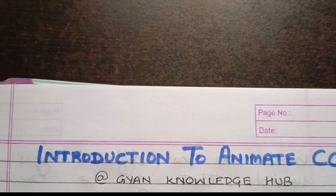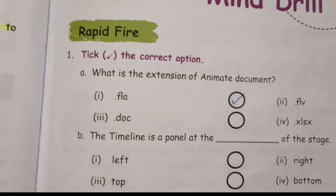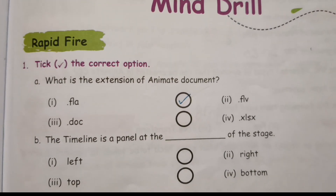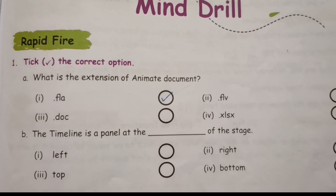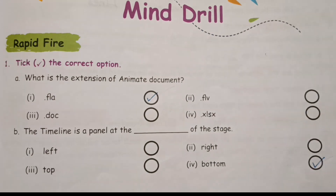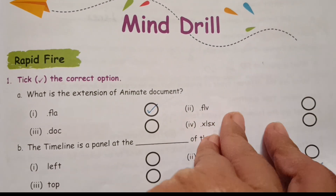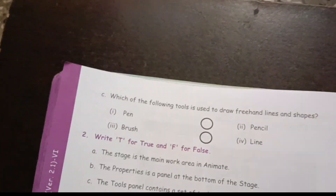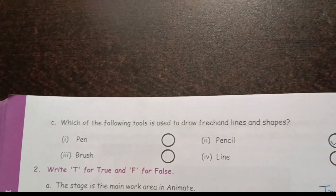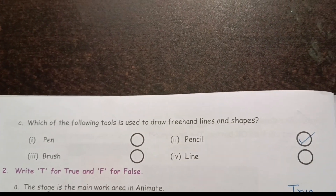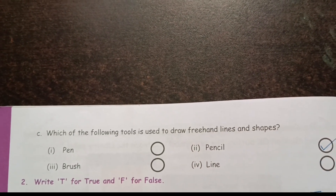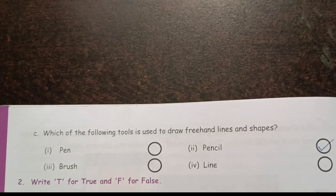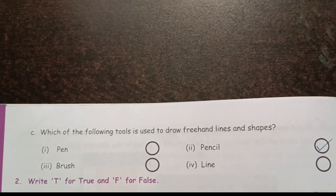We'll start the back exercises given on page 83, Mind Drill. What is the extension of an Animate document? It is dot FLA. The timeline is a panel at the bottom of the stage. Next question: which of the following tools is used to draw freehand lines and shapes? It is the Pencil tool.